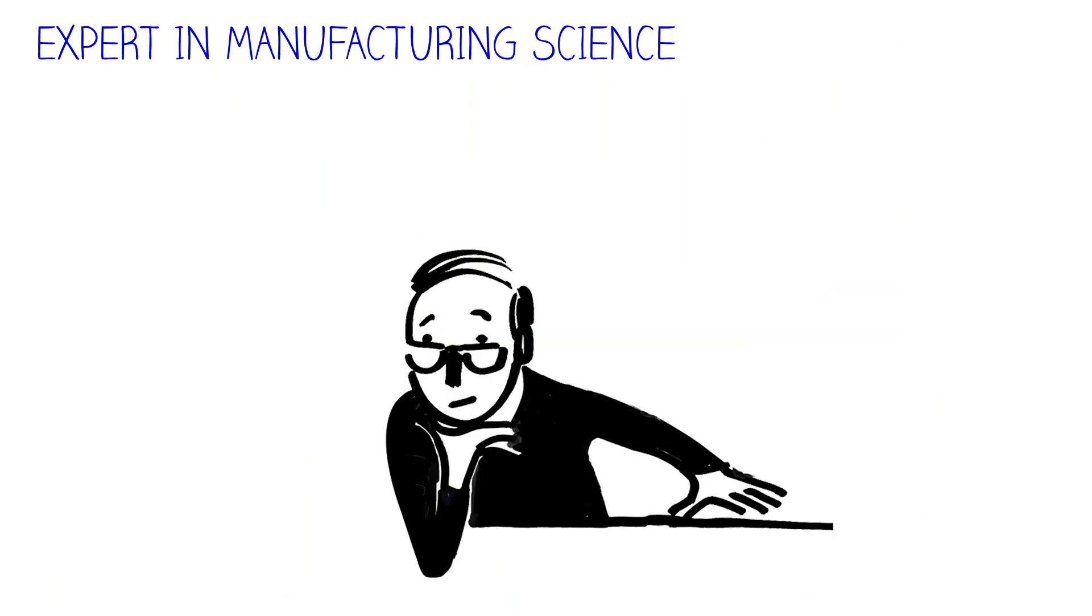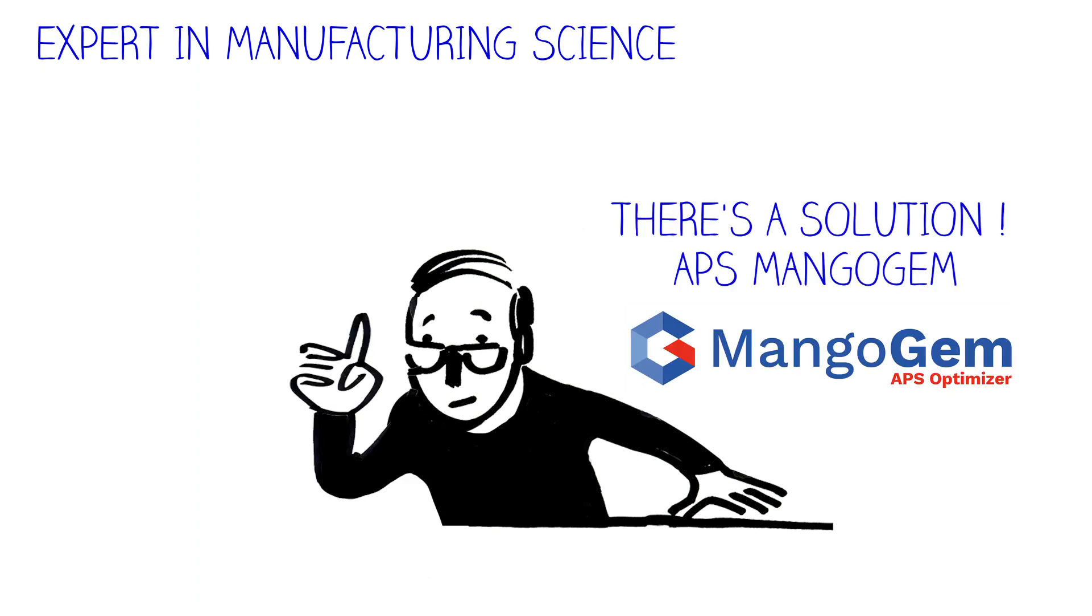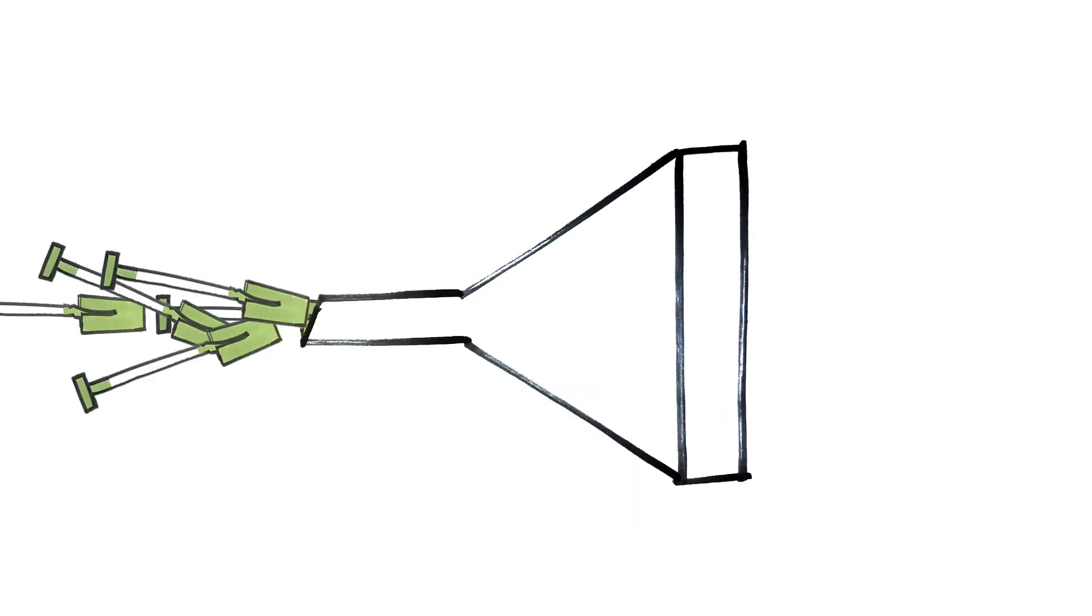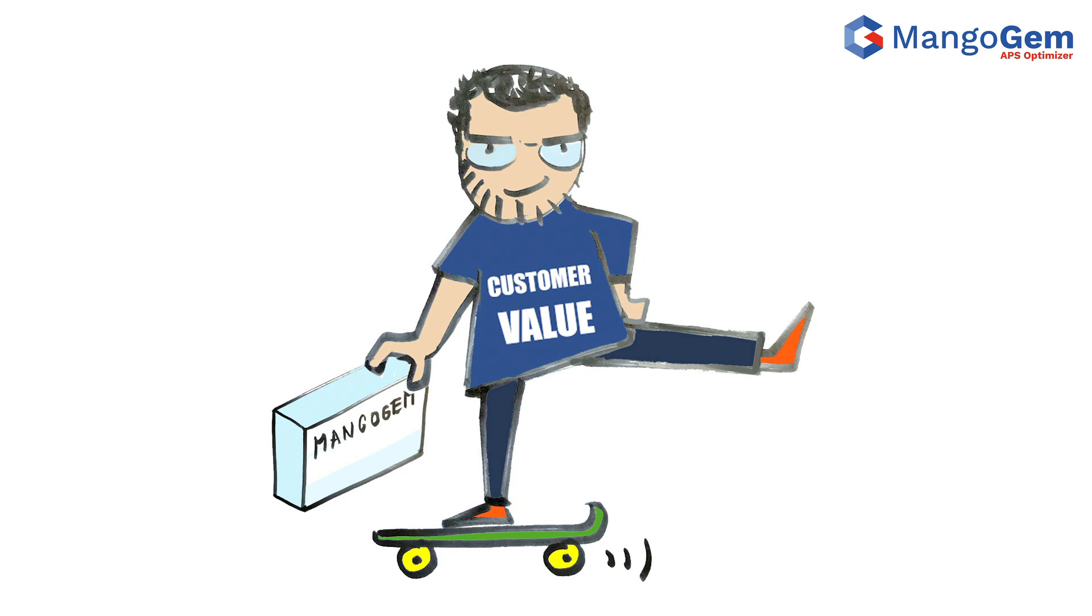One day I talked to Sam, an expert in manufacturing science. He has discovered a hidden gem, an innovative solution for advanced planning and scheduling optimization by Mango Gem. I explained my challenges to Ben and he showed me the APS optimizer.